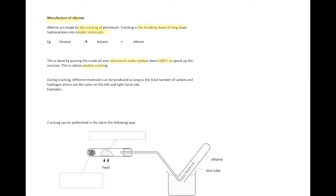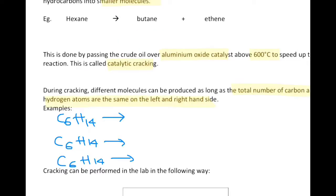This is called catalytic cracking because aluminium oxide acts as a catalyst. You can also use ceramic as a catalyst. Different molecules can be produced during cracking, as long as the total number of carbon and hydrogen atoms remains the same. Let's look at the cracking of hexane as an example.